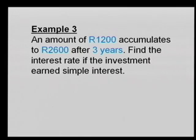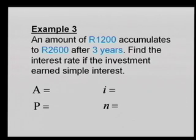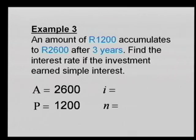One final example — example three. An amount of one thousand two hundred accumulates to two thousand six hundred after three years. Find the interest rate if the investment earns simple interest. Write down A, P, I, and N. P is one thousand two hundred, A grows to two thousand six hundred, N is three years, and then we need the interest rate I. This is a little more difficult mathematically — normally you're given three values and find one.